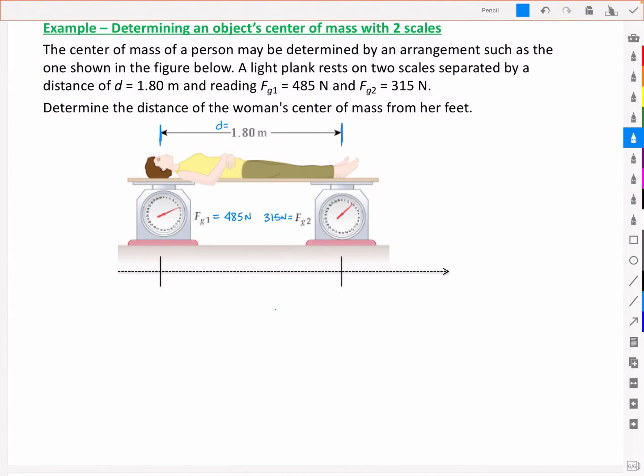It shows you the distance from the scale on the left to the scale on the right is 1.80 meters. Her head's resting on the left scale and her feet are resting on the right scale, and we're trying to determine where her center of mass will be.